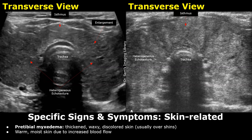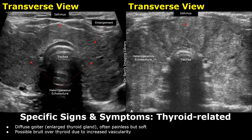Skin-related issues include pretibial myxedema, in which there is thickened, waxy, discolored skin usually seen over the shins. The skin may be warm and moist due to increased blood flow. In Graves' disease, there is usually a diffuse enlargement of the thyroid, called diffuse goiter.